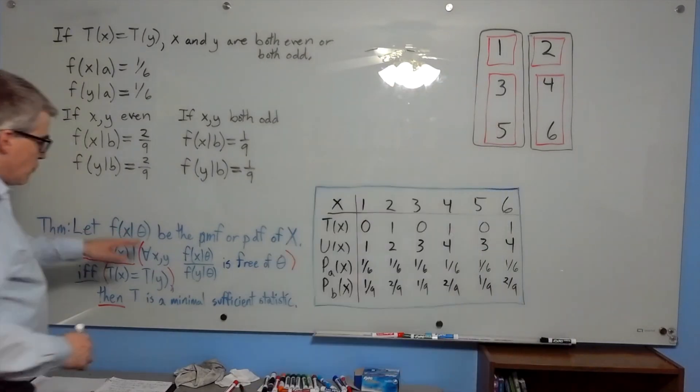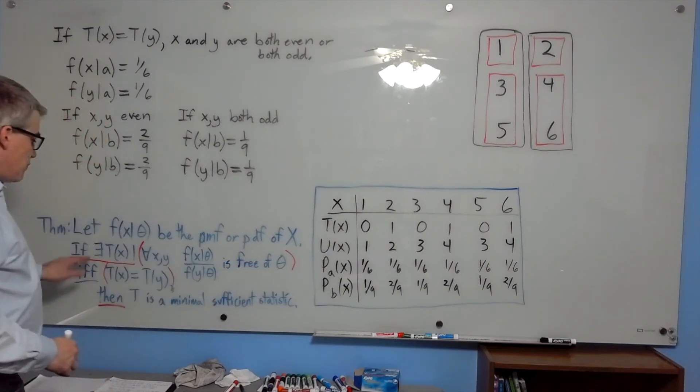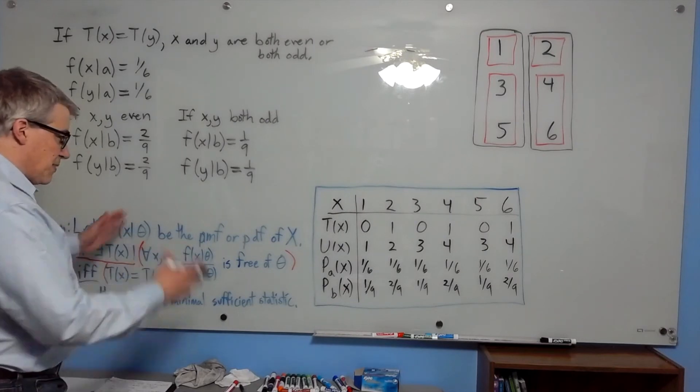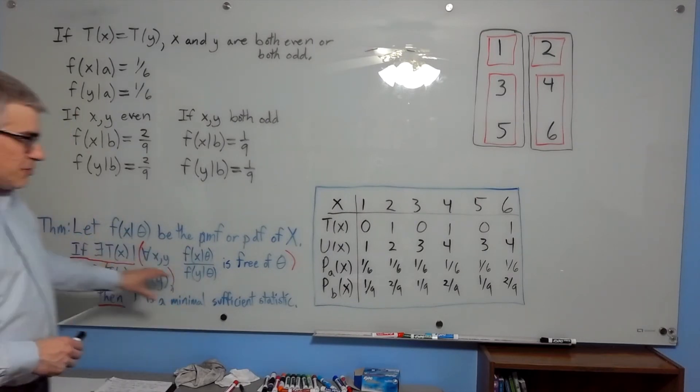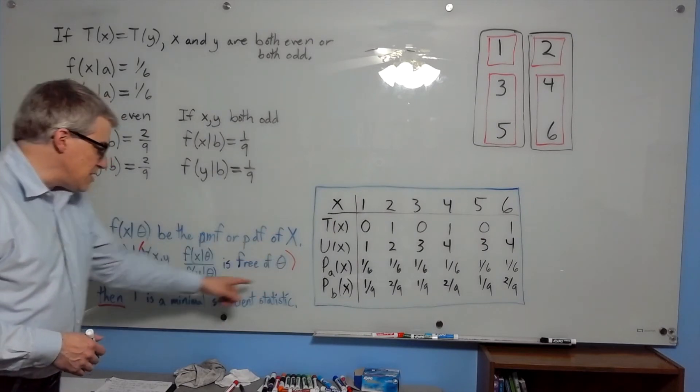The condition is for all x and y, f of x given theta over f of y given theta is free of theta if and only if t of x equals t of y. So there's a lot there. Let's try and apply this theorem to this example. We already know what we want t to be. It's 0 for odd and 1 for even. So we're claiming that this exists, and we have to check whether it satisfies this condition.